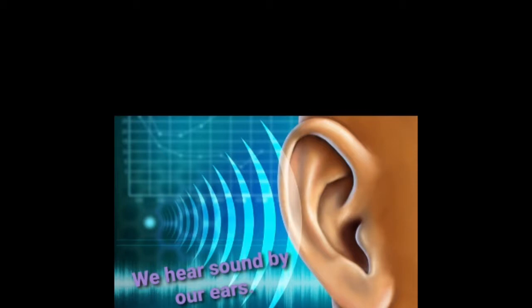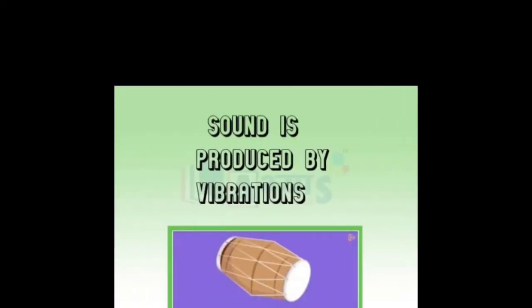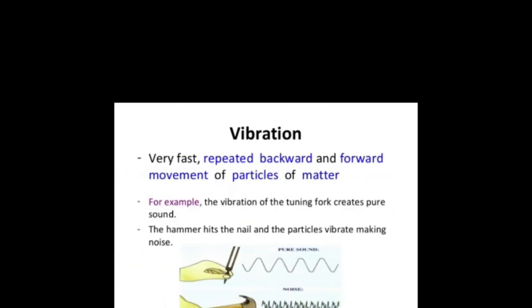What is vibration? Vibration is very fast, repeated backward and forward movement of particles of matter. For example, the vibration of the tuning fork creates pure sound, and when a hammer hits the nail, the particles vibrate making noise.